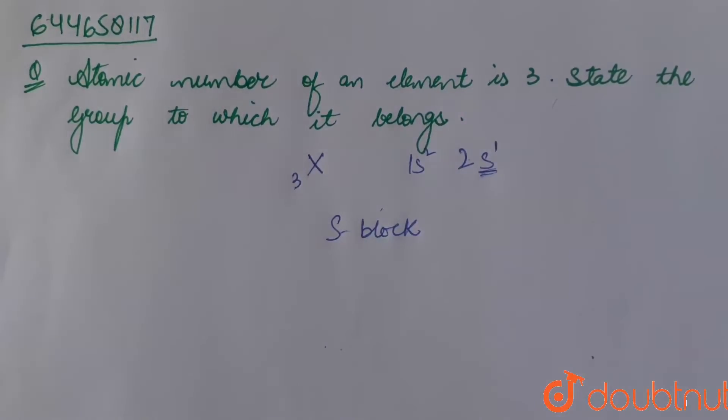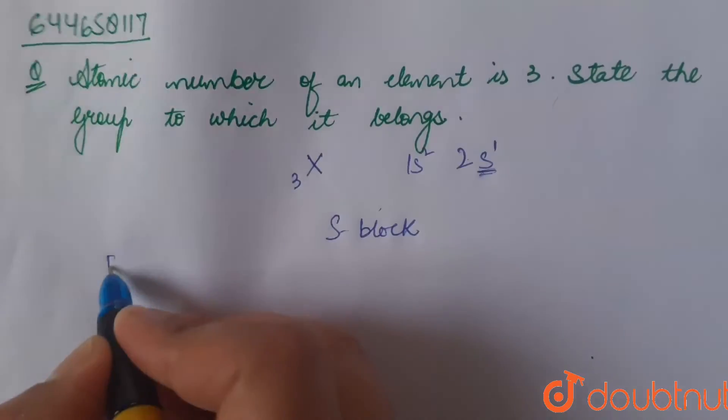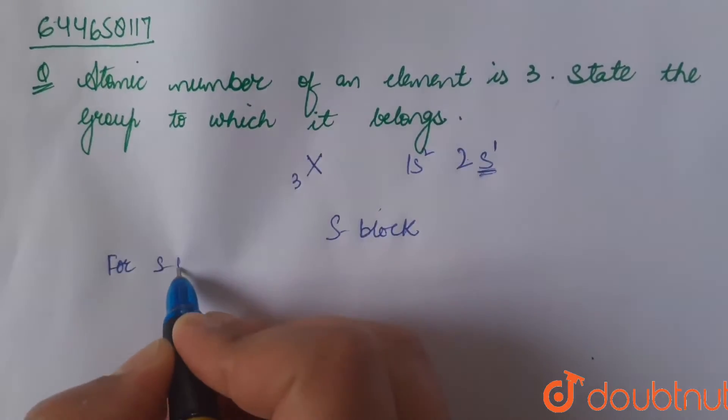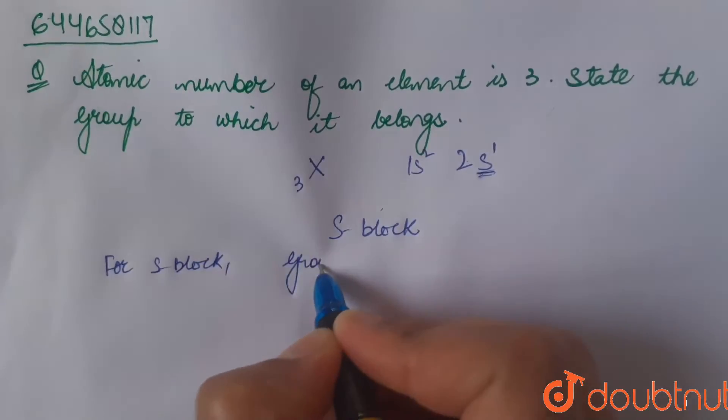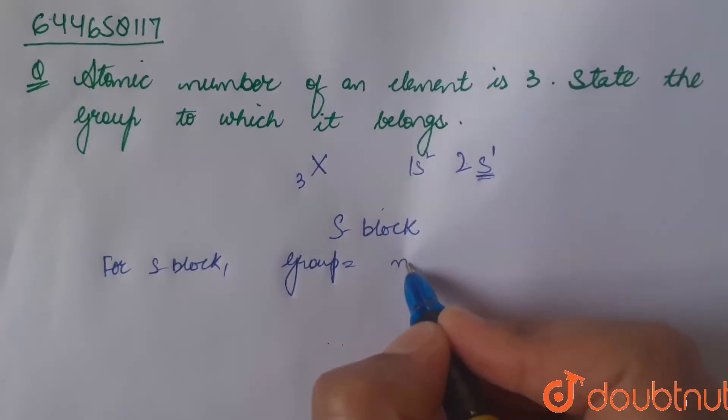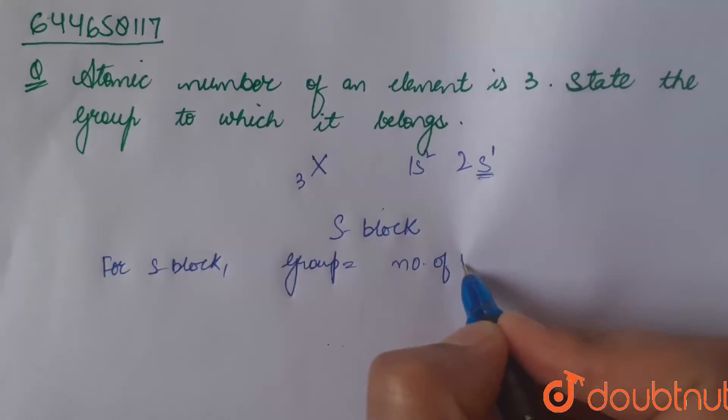Now, to determine the group, we have the rule. For s block element, group equals to number of valence electrons. Number of valence electrons.